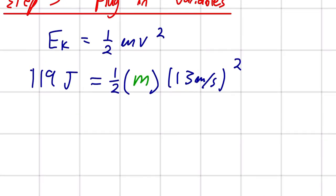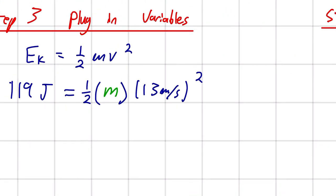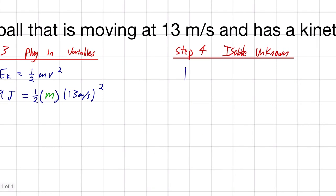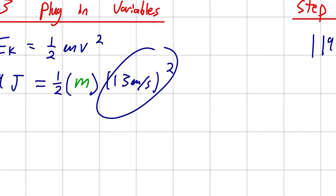So, in this equation, our unknown is m, and we want it to be isolated on one side of the equal sign. So, the first thing I want to do is multiply this out.